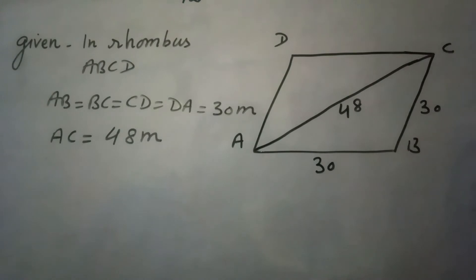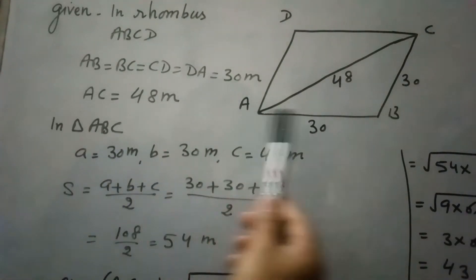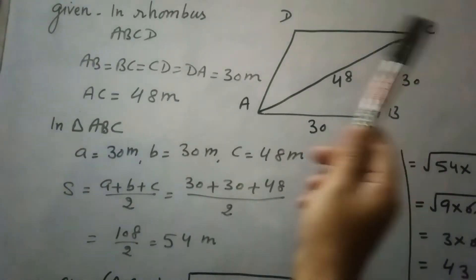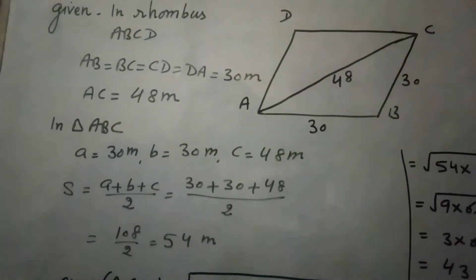Let us find the area of triangle ABC by Heron's formula. In triangle ABC, let a equals 30, b equals 30, and c equals 48. The semi-perimeter is a plus b plus c divided by 2, which equals 54.